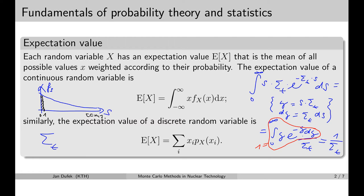In a similar way, the expectation value is also defined for discrete random variables. The expectation value in this case is simply calculated by summing up the values of the random variable with the weighting factors equal to the probabilities associated with the values of the random variable.